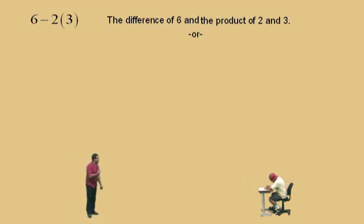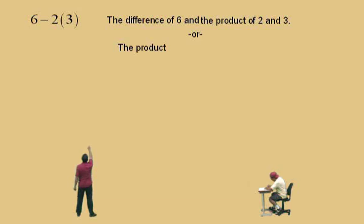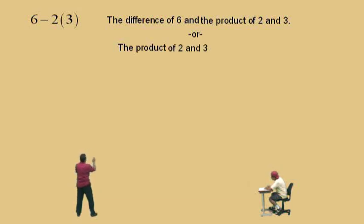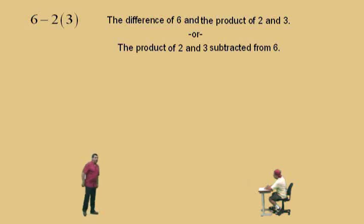Let's try this another way. Or, we could write this as the product: the product of two and three is being subtracted from what, Charlie? Six — that's right. This is a tough problem, so you've got to practice at these.